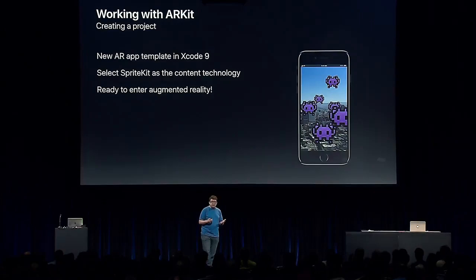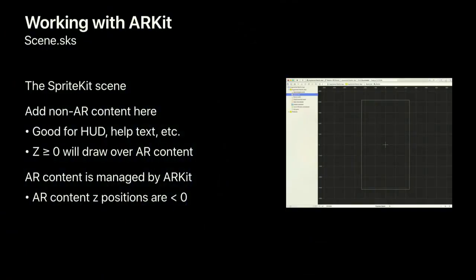The resulting project looks pretty standard for an iOS app, but let's go through the important files. First, there's Scene.sks — a standard SpriteKit scene where you create and lay out any non-AR content. It acts like an overlay for AR content, useful for HUD elements and help text. Nodes with a Z position greater than or equal to zero will draw over any AR content ARKit adds. All nodes managed by ARKit have Z positions less than zero.